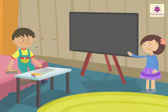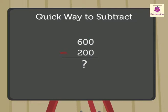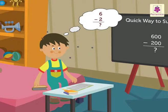Let's take an example. What is 600 minus 200? Think. How much is 6 minus 2? 6 minus 2. It is 4.